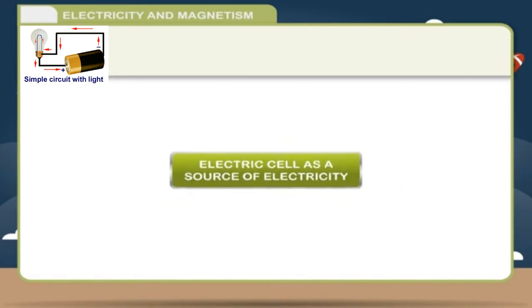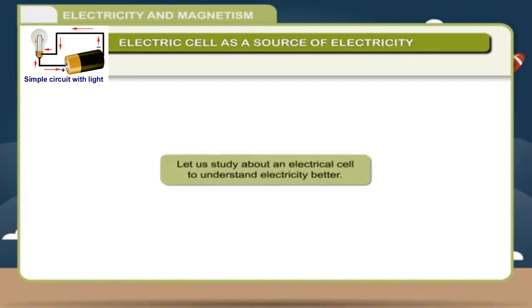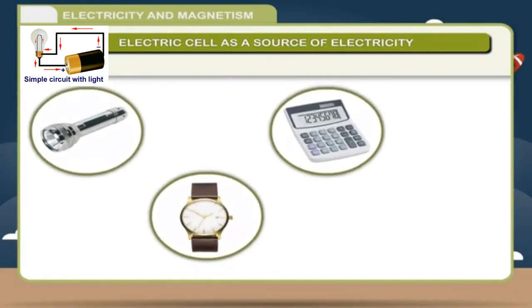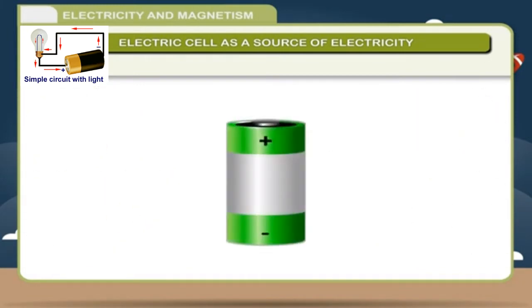Electric cell is a source of electricity. Let us study about an electrical cell to understand electricity better. We use cells in torches, watches, calculators, toys etc. Students, when you look at a cell, the cell is a source of electricity.